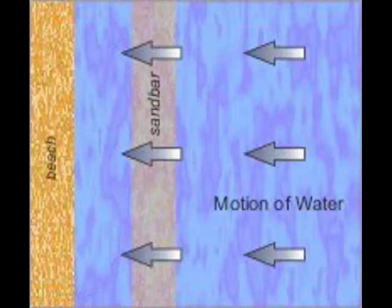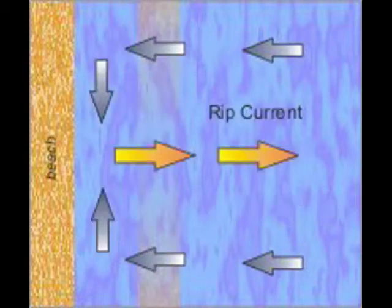Rip currents form as water energy builds up between sandbars and the beach during high surf conditions, as the wave height and length increases. When enough energy builds up, it escapes and is channeled back out to the ocean near a low spot or break in a sandbar.